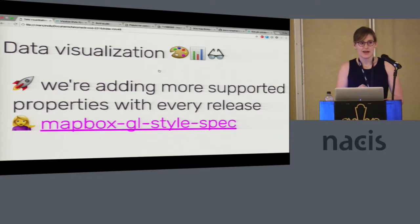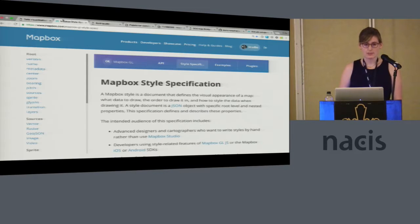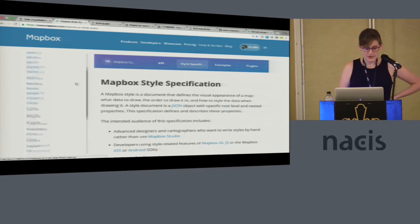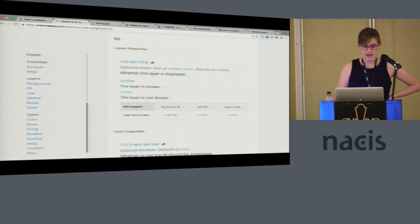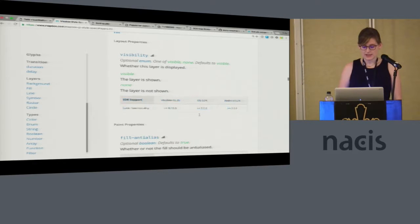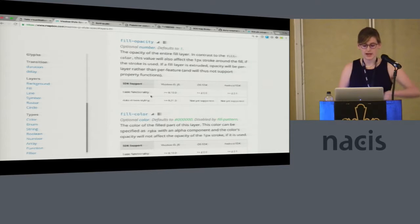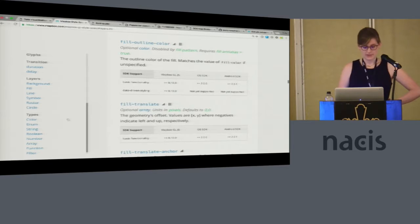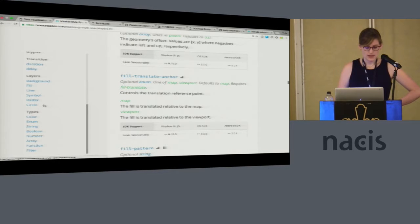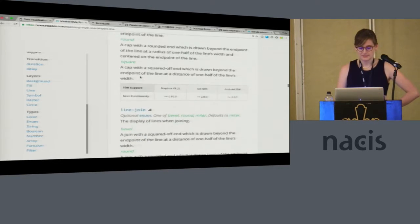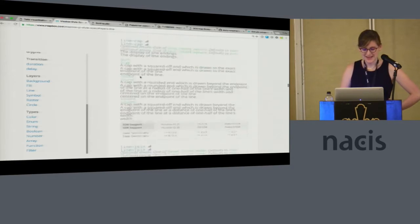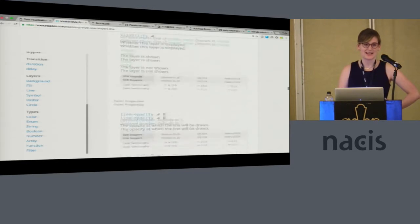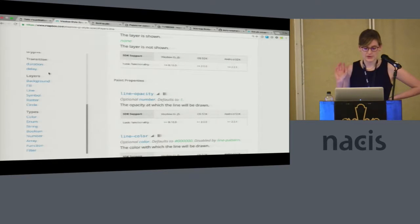Another application for this is data visualization. We are adding support for data-driven styling property functions slowly as we have the engineering resources. You can go to our style spec website where we have tables showing whether data-driven styling is supported. In the fill layer, we have support for fill-opacity, fill-color, and more. Line paint properties are about to be merged in the next release, and we're hoping to have full data-driven functionality for all layer types soon.